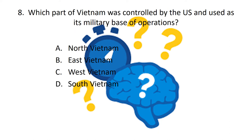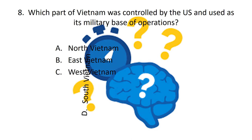Question eight: which part of Vietnam was controlled by the US and used as its military base of operations - North Vietnam, East Vietnam, West Vietnam, or South Vietnam? The answer is South Vietnam.